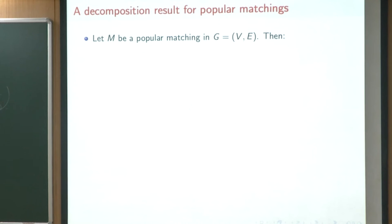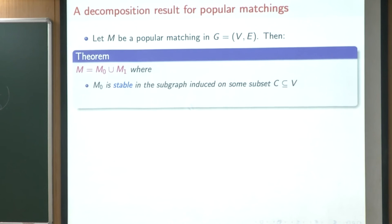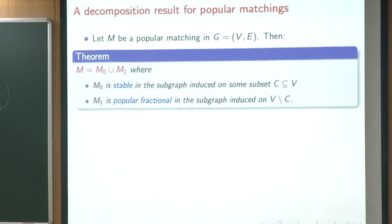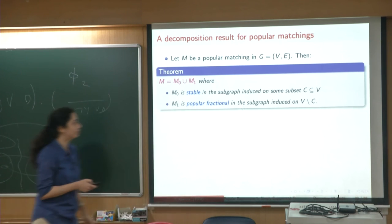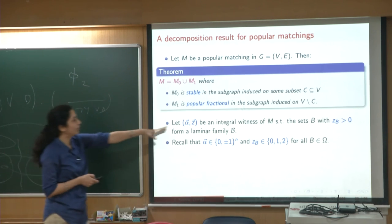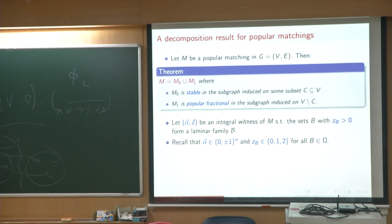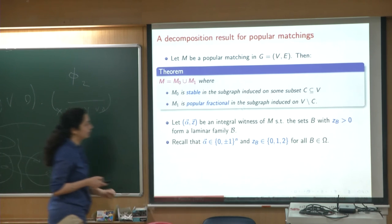Let's go back to popular matchings — I introduced popular fractional matchings because we need them in a decomposition result. Any popular matching M can be partitioned as M0 union M1, where M0 is stable in a subgraph of our graph and M1 is popular fractional on the remaining part. Every popular matching has such a decomposition into a stable part and a popular fractional part. What really is the definition of set C? Since M is popular, we know it has an integral witness. Moreover, we can find a witness where the sets B that have support under vector Z form a laminar family — Edmonds' primal-dual algorithm shows this. So we can find an integral witness with a laminar structure on the sets B with support.